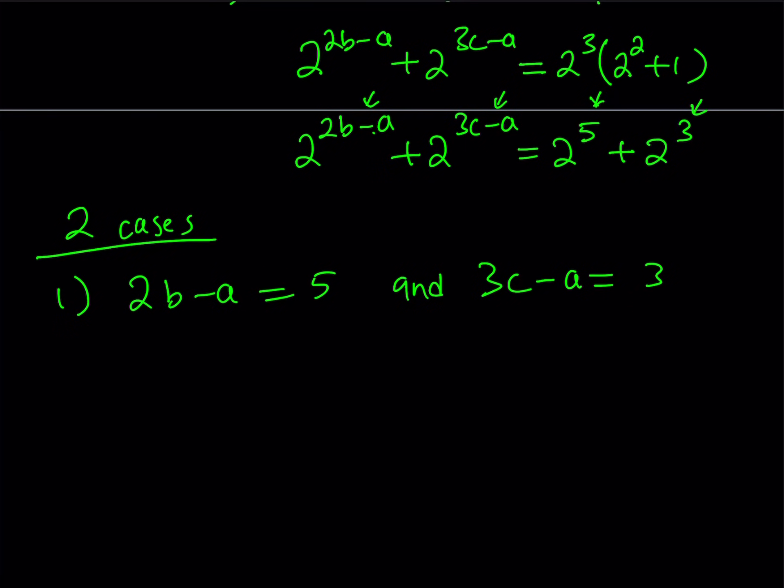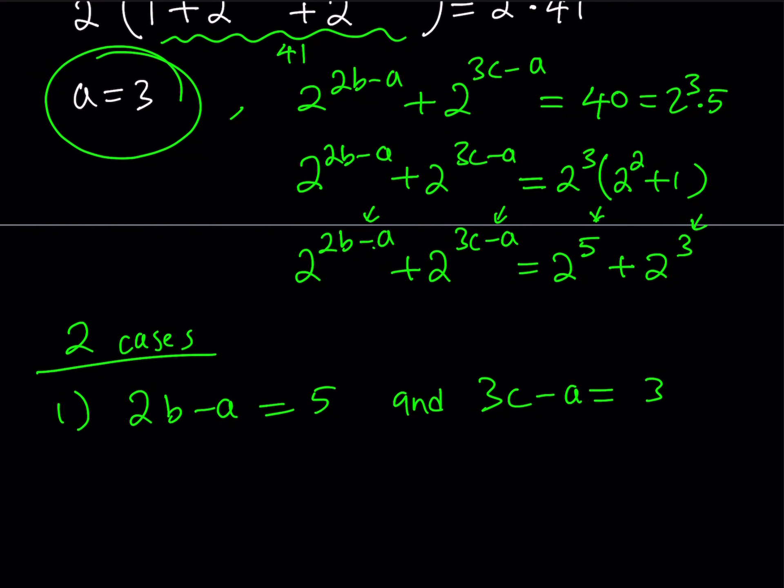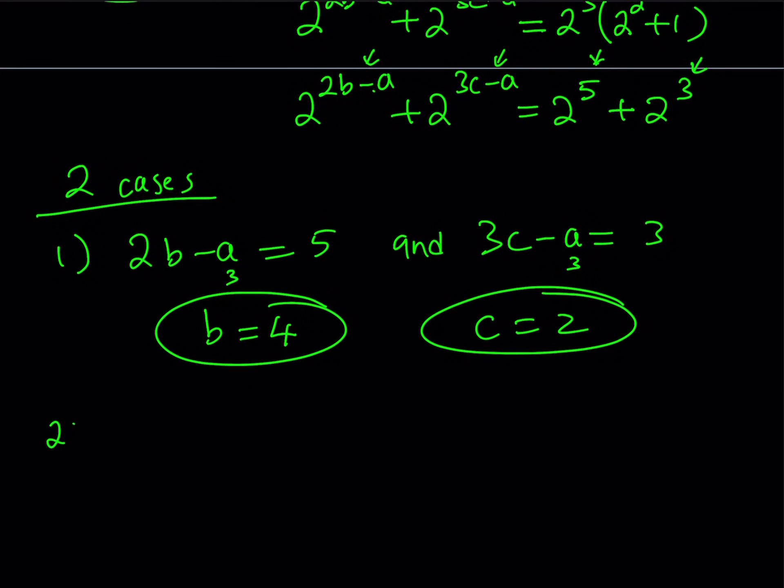So 2b minus a can equal 5, and 3c minus a can equal 3, because we have these exponents and we have those exponents. And obviously, since these two sums are equal to each other, is there a way that they're not going to be equal to each other but two different powers of 2 are going to add up to give us the same number? That is, is that going to be possible? Something to think about.